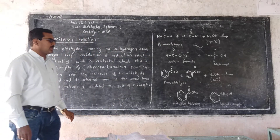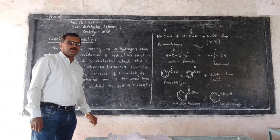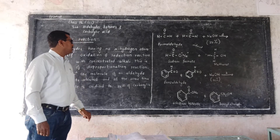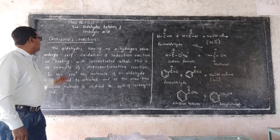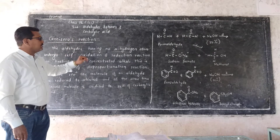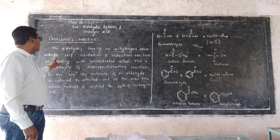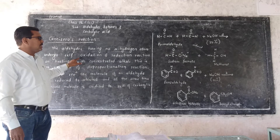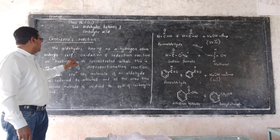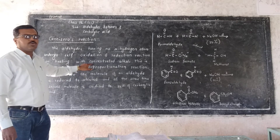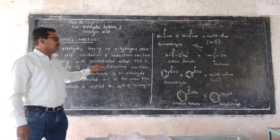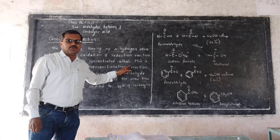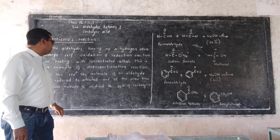So in formaldehyde or benzaldehyde, there is no alpha-hydrogen atom. Aldehydes with no alpha-hydrogen atom undergo both oxidation as well as reduction reaction on heating with concentrated alkali, like sodium hydroxide or potassium hydroxide.